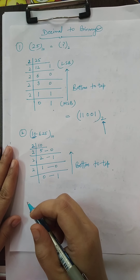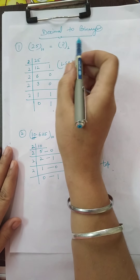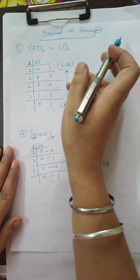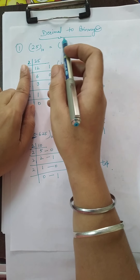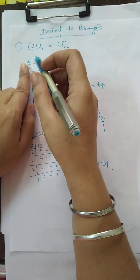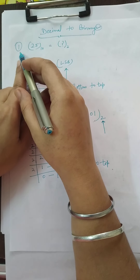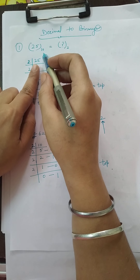Good morning. Let's do decimal to binary conversion. For the decimal to binary conversion, we have this decimal number 25.